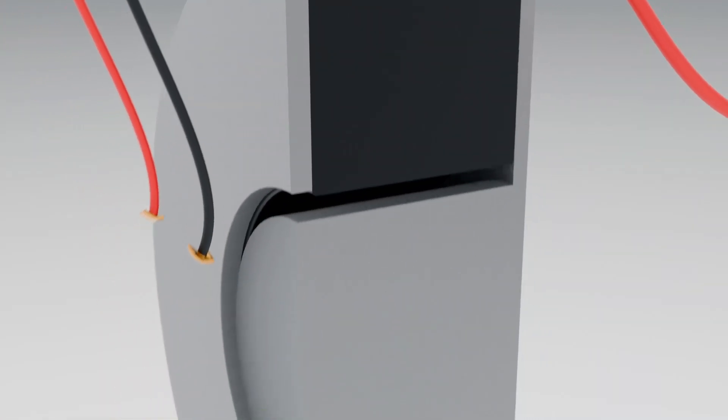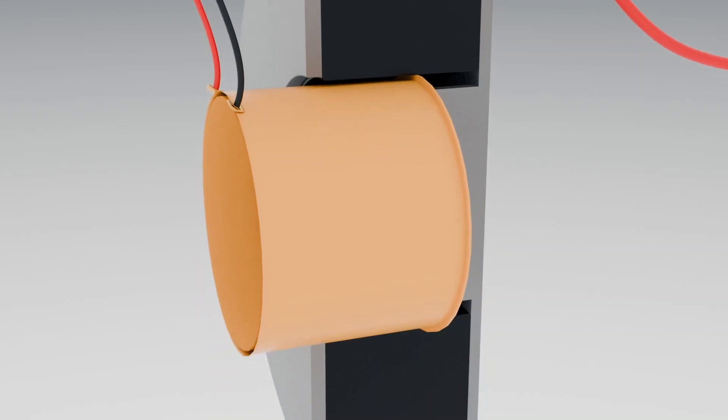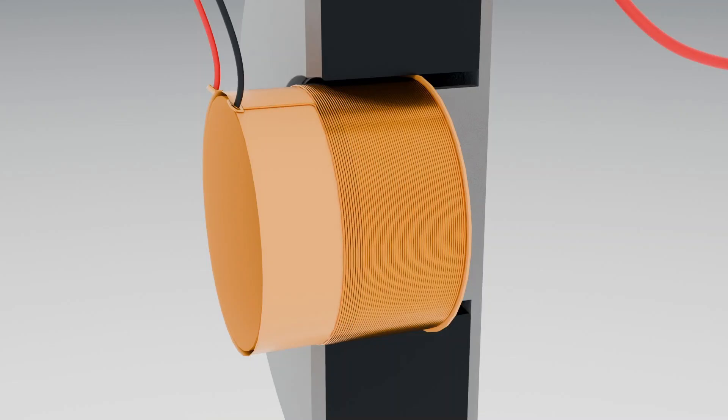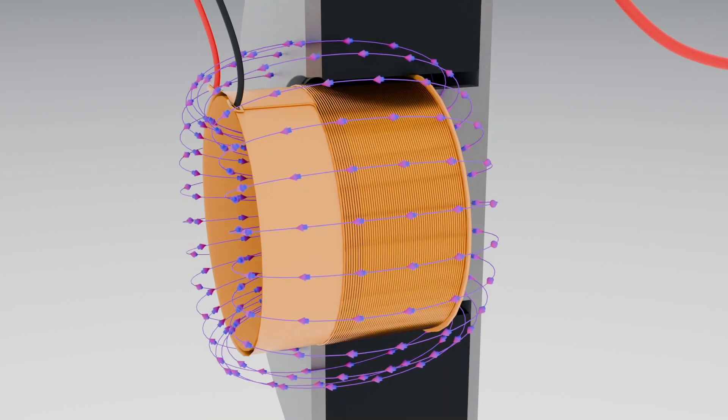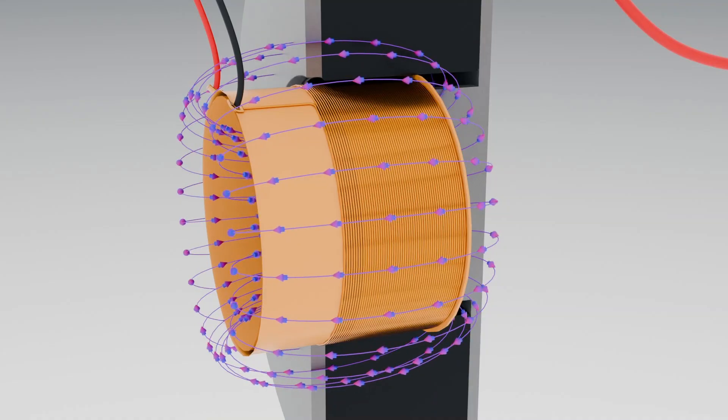The coil positioned slightly above the center of the permanent magnet is called the voice coil. It is made by winding thin copper wire around a heat resistant cylinder. This coil acts as an electromagnet when current passes through it causing the cone to move up and down.